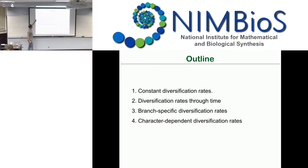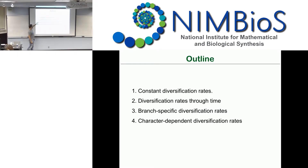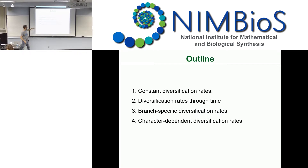For the outline: the first part I will talk mostly about constant diversification rates and then diversification rates through time. After the morning break, I will talk about branch-specific diversification rates and start going into character-dependent diversification rates, because that really fits into those two topics.